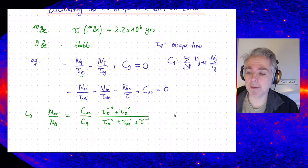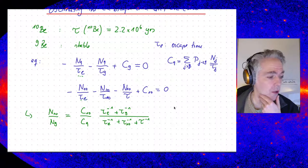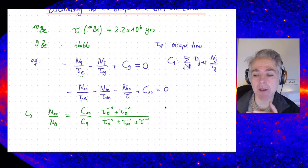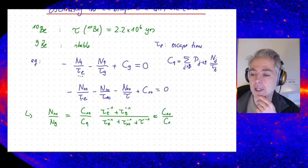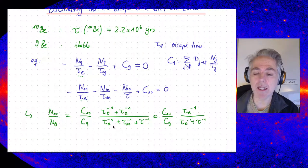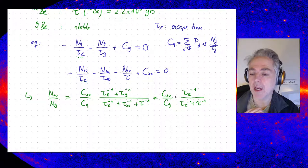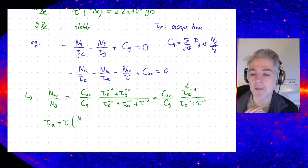Now, if we are at sufficiently high energies, the escape time will be shorter than the spallation time. So we can simplify, assuming tau_9 and tau_10 are both much larger than tau_e, and we can neglect the spallation terms. Then N10/N9 simplifies to C10/C9 times tau_e divided by tau_e plus the decay time. Solving for the unknown tau_e, we find: tau_e equals tau times N9 divided by N10, minus 1.